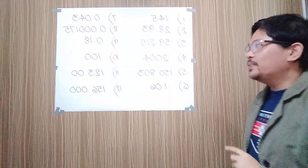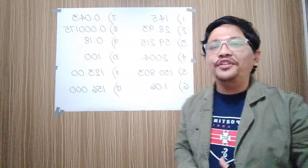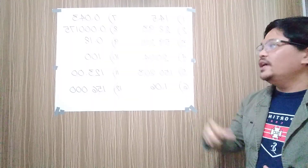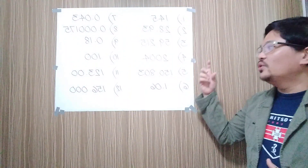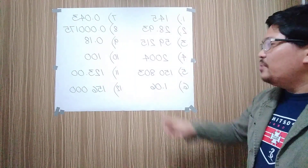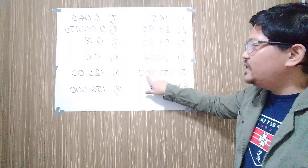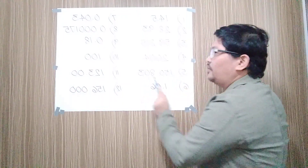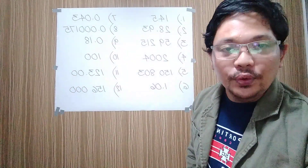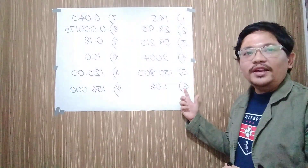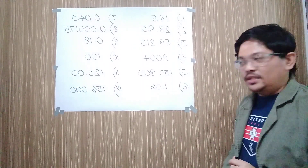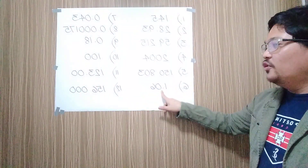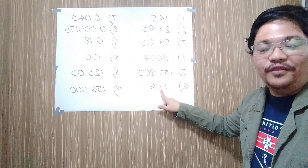For example number five, we have 150,803. How many significant figures are there in 150,803? There are six significant figures, because this zero is significant and this zero is also significant. Counting all the digits, there are six. For example number six, the given is a decimal number 1.06. The zero here is placed in between 1 and 6. Therefore, this zero is significant, giving three significant figures.